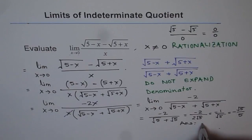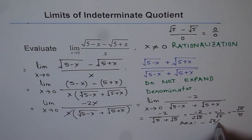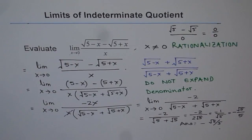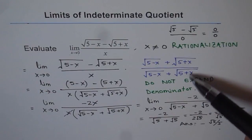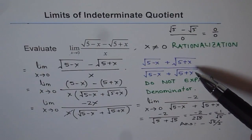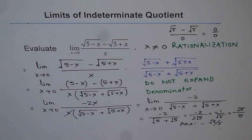The answer is minus square root of 5 over 5 — that is the limit of the given function as x approaches 0. Rationalization works by multiplying and dividing by the conjugate of the term, then utilizing the difference of squares identity: a plus b times a minus b equals a squared minus b squared. That is how we simplify such questions.